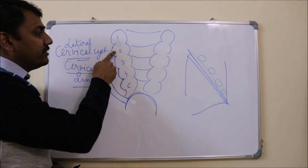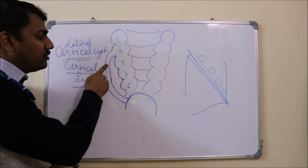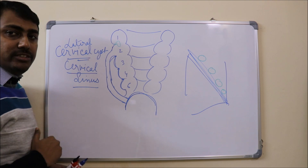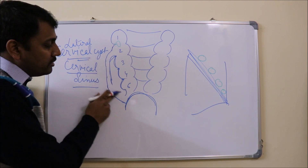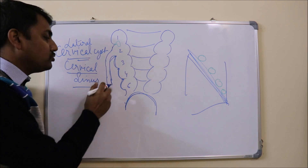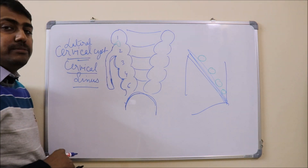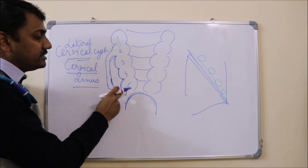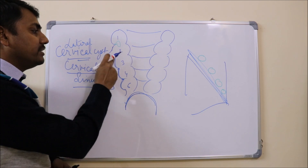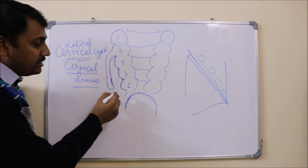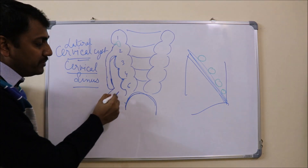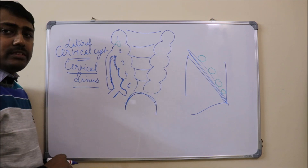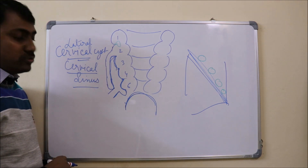There could be a condition when the second pharyngeal arch doesn't grow downward and fuse with the epicardial ridge. In that condition, there would be a fistula. This fistula will drain the cyst formed by the second, third, and fourth pharyngeal clefts. This is known as an external branchial fistula.